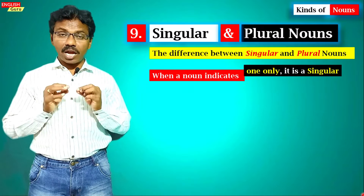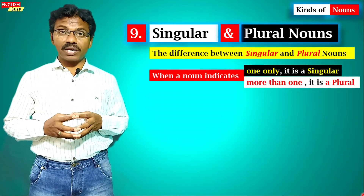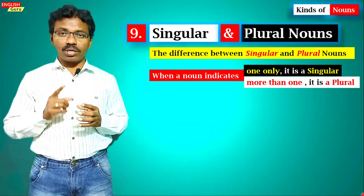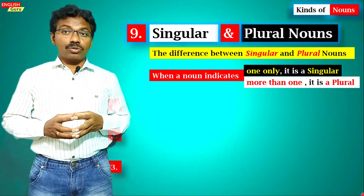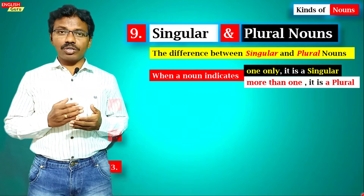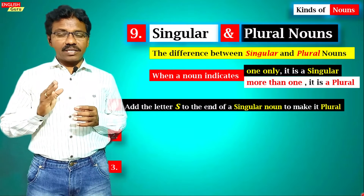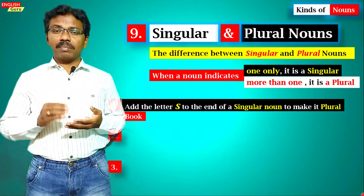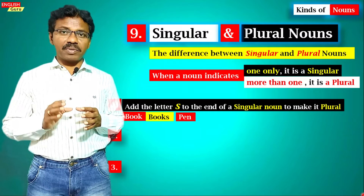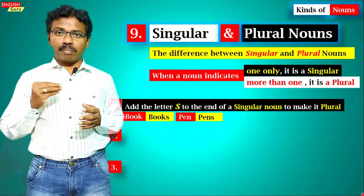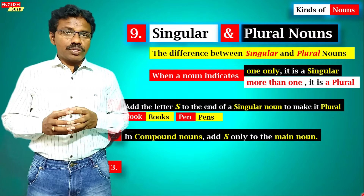The ninth and tenth kinds are singular and plural nouns. When a noun indicates only one thing, one person, or one idea, it is a singular noun. When it indicates more than one, it is a plural noun. One way to form plurals is by adding the letter 's' at the end of a singular noun — for example, 'book' becomes 'books,' and 'pen' becomes 'pens.'